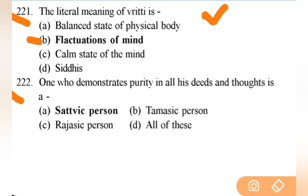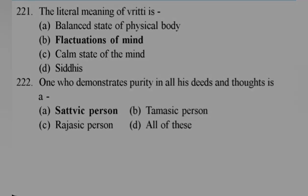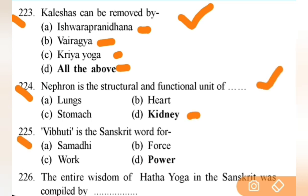The literal meaning of Vritti is — right answer is B — fluctuations of mind — important. Next: one who demonstrates purity in all deeds and thoughts is a Sattvic person — important. Next: Kleshas can be removed by all of the above — Ishwara Pranidhana, Vairagya, Kriya Yoga — very important. Next: nephron is the structural and functional unit of the kidney. Next: Vibhuti is the Sanskrit word for power — important.